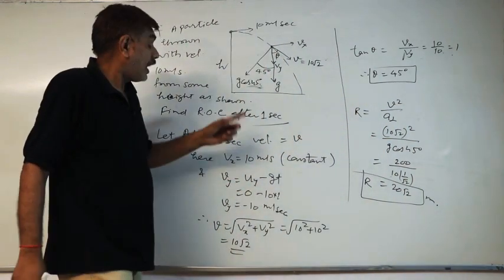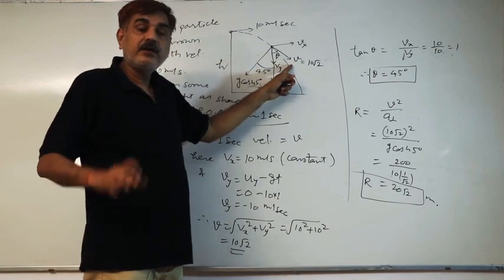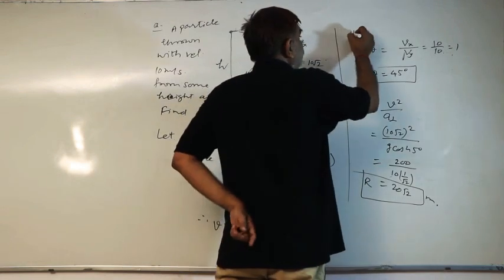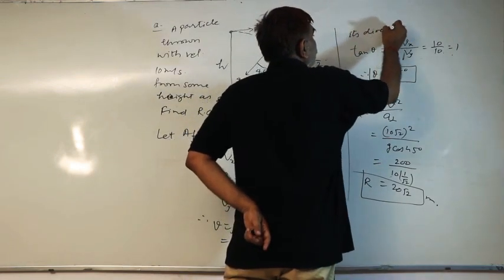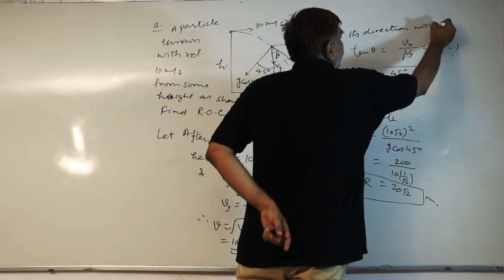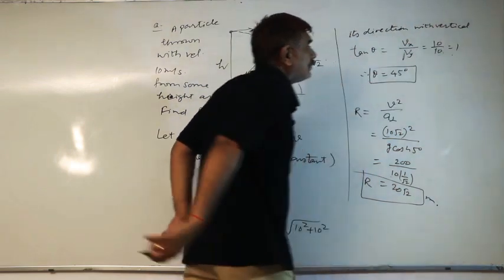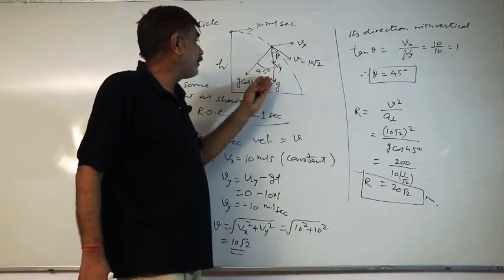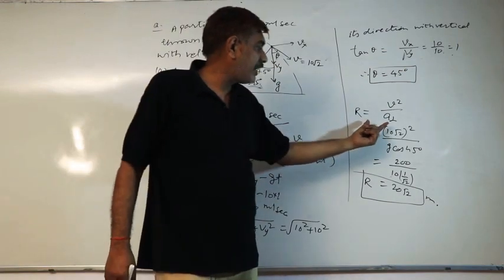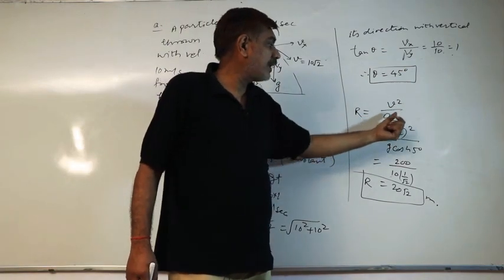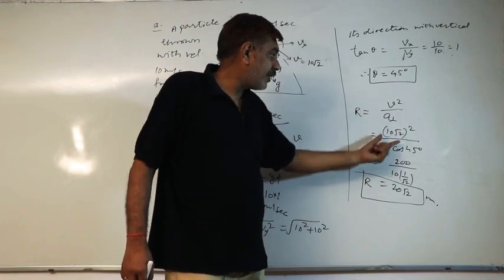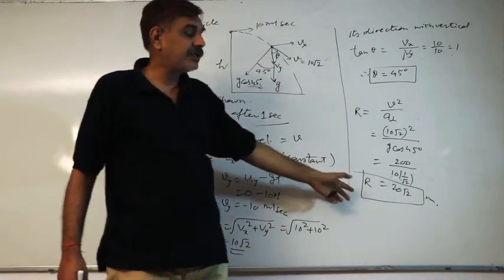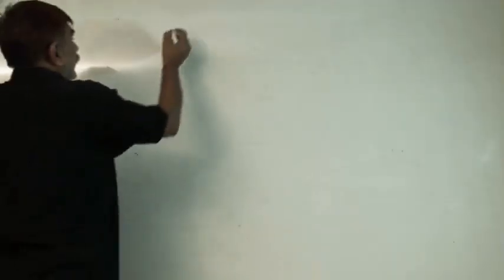To summarize: after 1 second, find the velocity and its direction; the angle with vertical gives you the direction. Then use the simple formula R = V² / a_perpendicular, substitute the values, and solve for the perpendicular component of acceleration. This gives the radius of curvature.